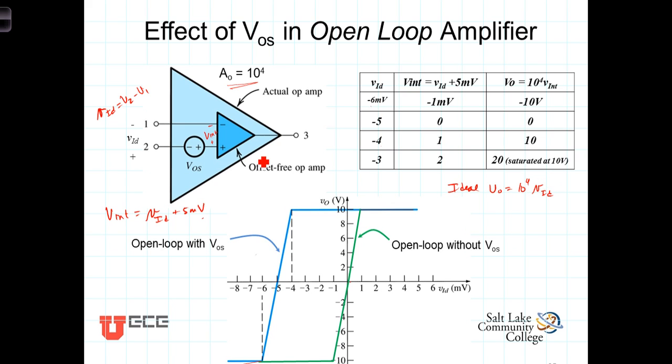So this offset voltage literally is an offset voltage. It's taken the ideal amplifier transfer characteristic and offset it 5 millivolts because this actually adds 5 volts to the externally applied differential voltage.